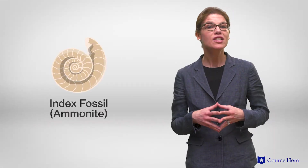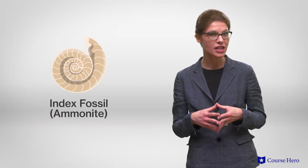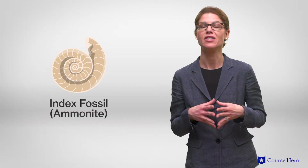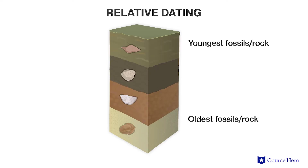For example, ammonites are considered index fossils because they lived only between 245 million years ago and 65 million years ago. Rock layers found with ammonite fossils must be within that same age range, and so we can conclude that other fossils found in the same rock layer must have lived within that same time frame. In general, if layers of rock are undisturbed, rock in the lower layers is older than rock in the upper layers, so the layer in which a fossil is found also helps determine the fossil's relative age.